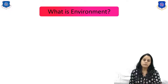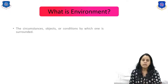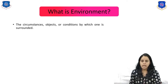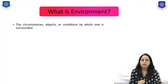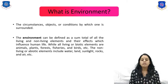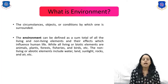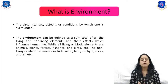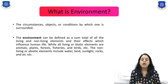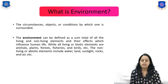The first question that comes to mind is: what is environment? The first definition is the circumstances, objects, or conditions by which one is surrounded. The second definition is that environment is the sum total of all living and non-living elements. The living or biotic elements include animals, plants, forests, fisheries, and birds, while the non-living or abiotic elements include water, land, sunlight, and rocks.